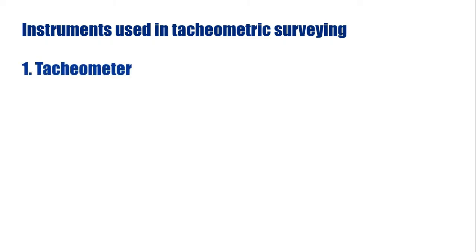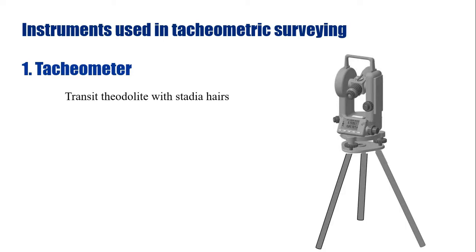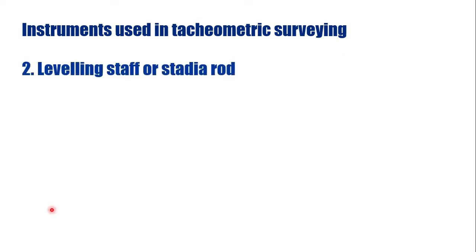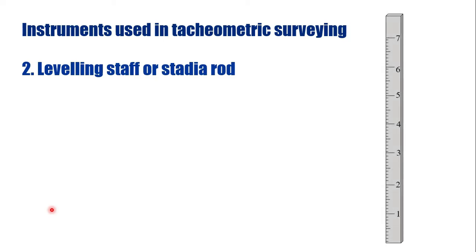To determine the horizontal and vertical distances, we need certain instruments. The first instrument is the tachymeter — a transit theodolite with stadia hairs, as shown in this figure. That transit theodolite consists of stadia hairs in its diaphragm: the upper stadia hair and the lower stadia hair. The other instrument required is the leveling staff or stadia rod, as shown in this figure.